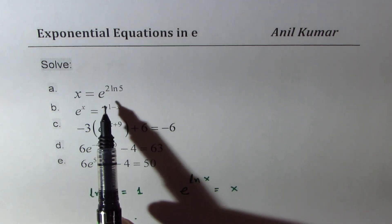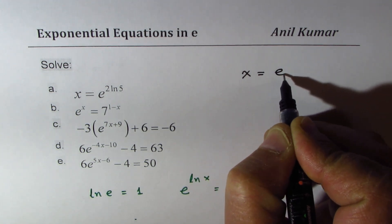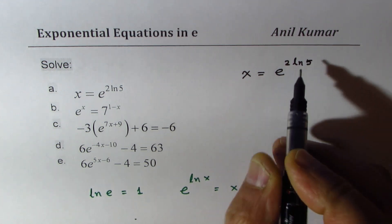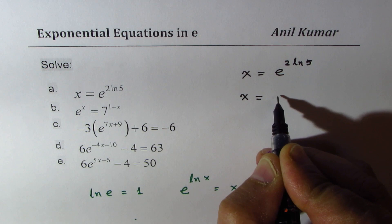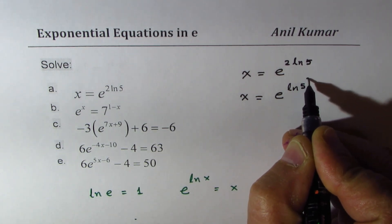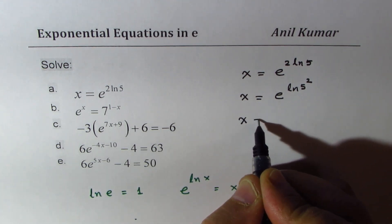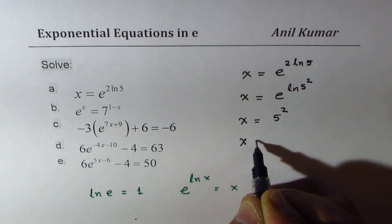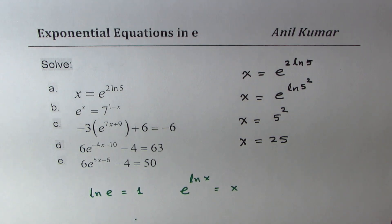Let me solve the very first one: x equals e to the power of 2·ln(5). Using the power rule I can rewrite this as x equals e to the power of ln(5²). Now e to the power of ln(5²) equals 5², so we get x equals 25 as the solution of the first equation.